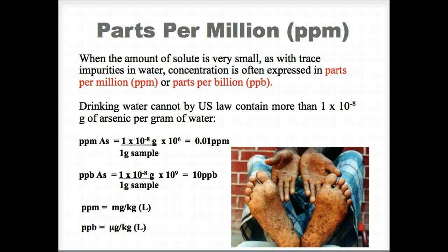We describe solutions by their concentration, and we have already discussed parts per hundred — that is, percent — and parts per million. Remember that one milliliter of water weighs one gram, so a liter is one thousand grams, or one kilogram. High levels of arsenic in drinking water can cause various diseases, including cancer.